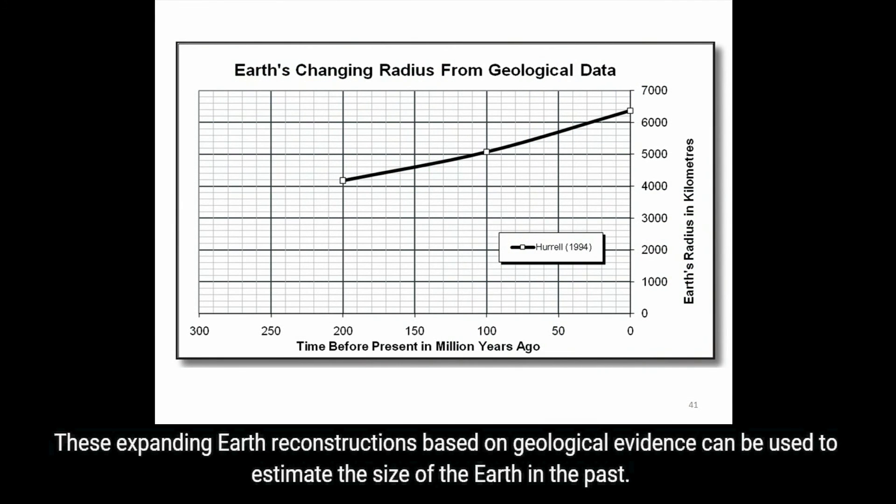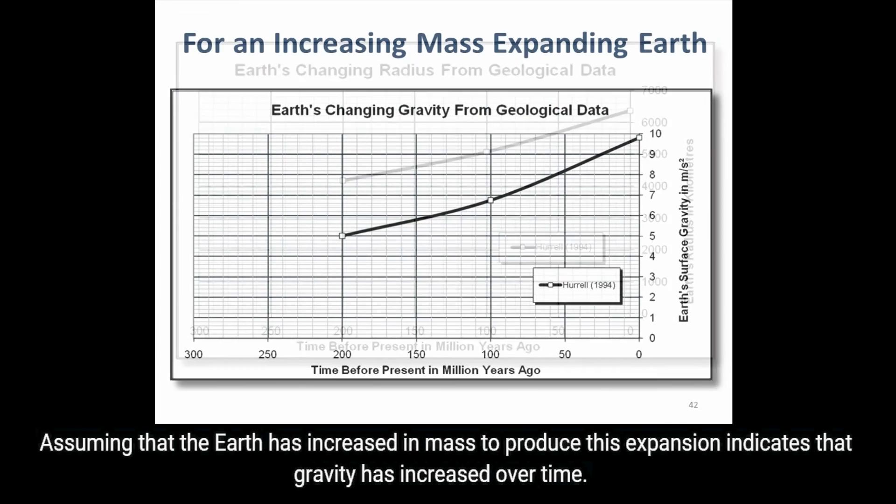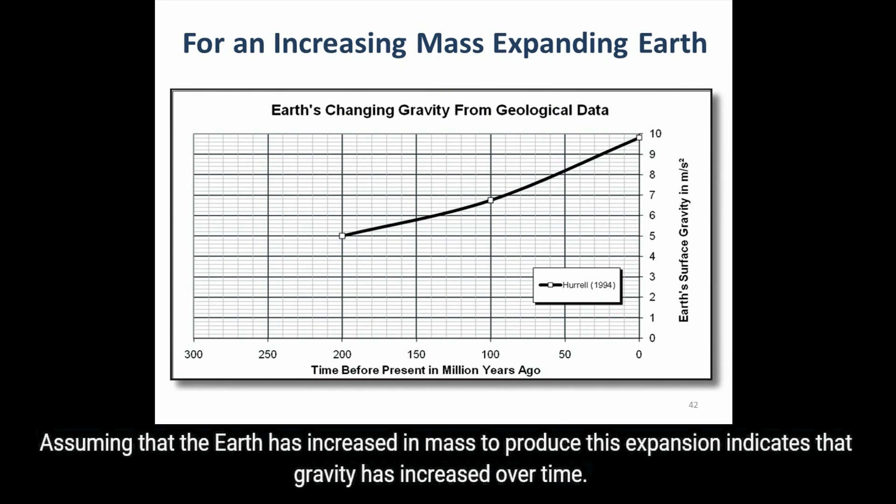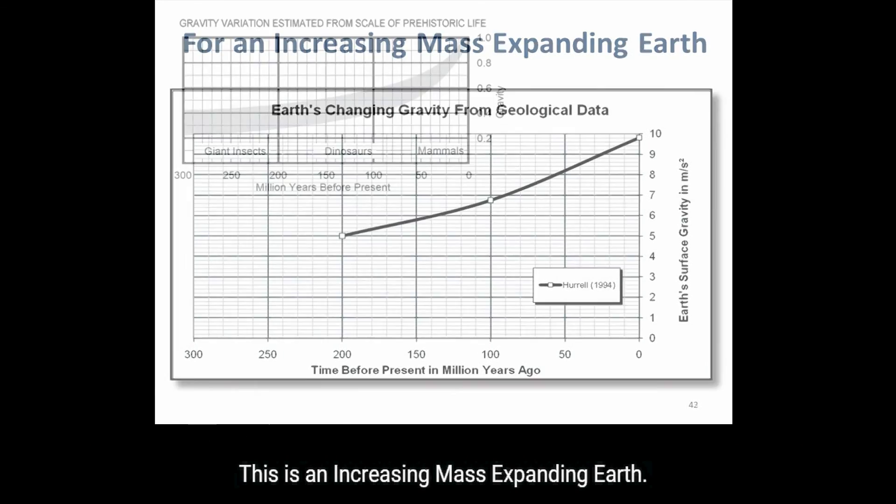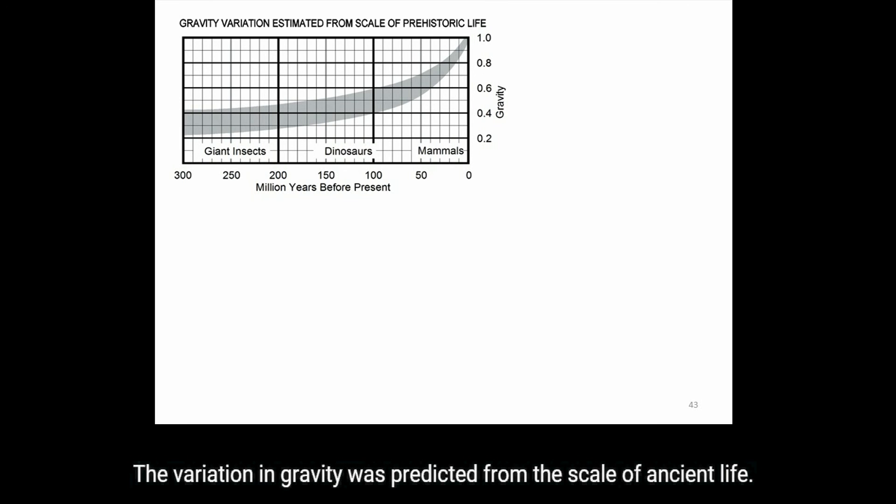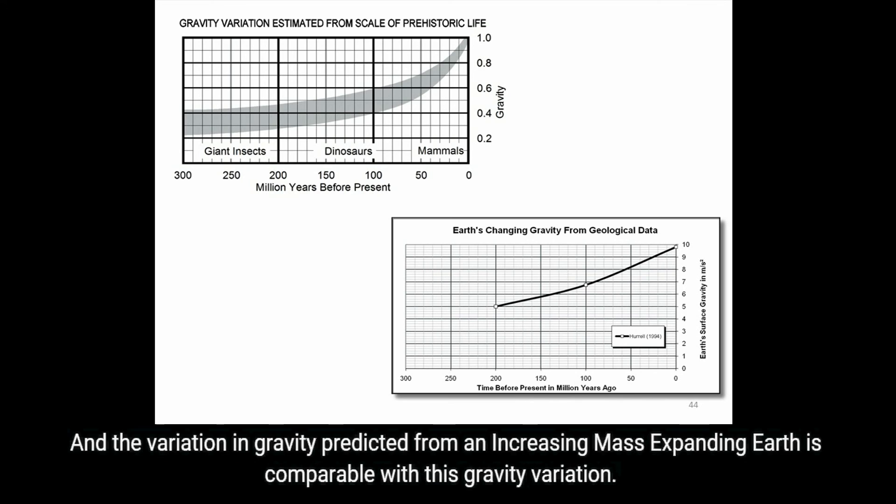These expanding Earth reconstructions based on geological evidence can be used to estimate the size of the Earth in the past. Assuming that the Earth has increased in mass to reduce the expansion indicates that gravity has increased over time. This is an increasing mass expanding Earth. The variation in gravity was predicted from the scale of ancient life, and the variation in gravity predicted from an increasing mass expanding Earth is comparable with this gravity variation.